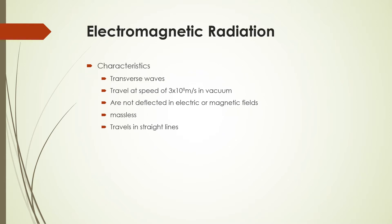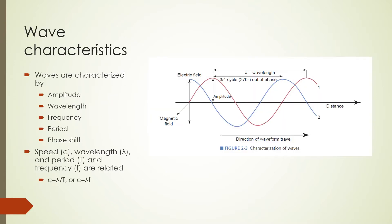Electromagnetic waves are transverse waves that travel at a speed of 3 times 10 to the power 8 meters per second in vacuum. This is the speed of light. They are not deflected in electric or magnetic fields because they have no charge. They are massless and travel in straight lines. These waves are characterized by the following quantities.